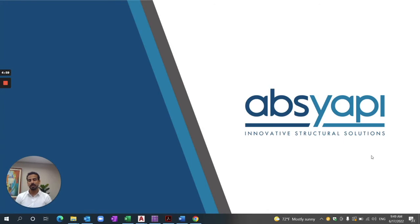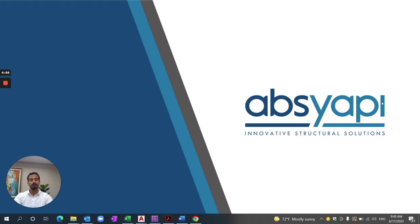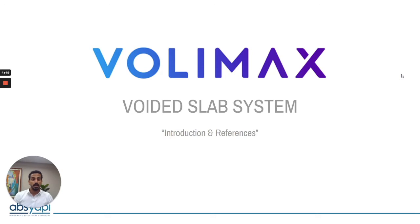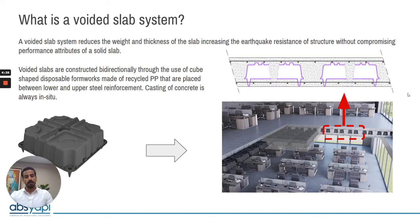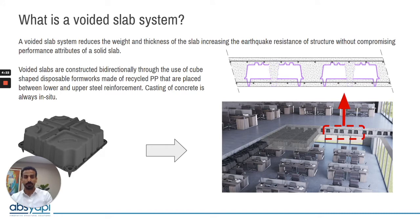Hello everyone, this is Khaled from ABS. Today I'm going to explain how to design a voided slab system with finite element software like SAFE or ETABS. First, I want to give a short introduction about our product called Volimax. Volimax is a type of voided slab system, and the main idea is to create voids inside the slab in the non-working concrete area to reduce the slab self-weight.